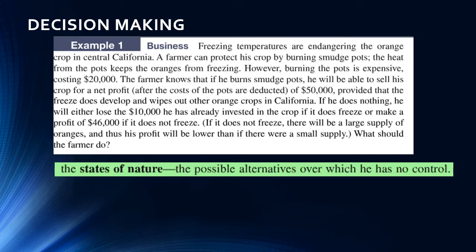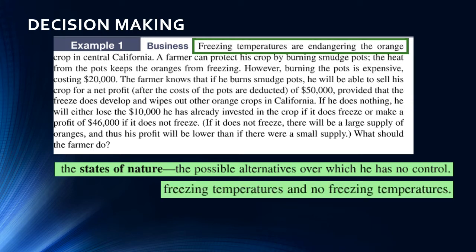What we're going to do is look at something called a decision matrix. We build a matrix that compares the states of nature — these are the possible alternatives over which the decision maker has no control. In this problem, what are the states of nature that the farmer has no control over? He has no control over whether it freezes or not. He may know a weather prediction, but he doesn't know for sure. So the states of nature are: it does freeze, or it doesn't freeze.